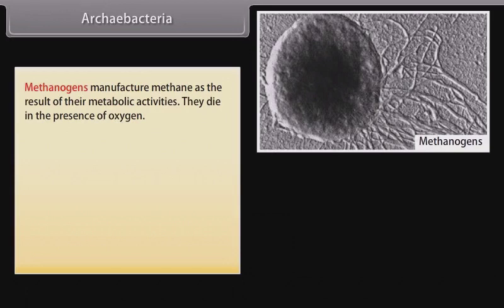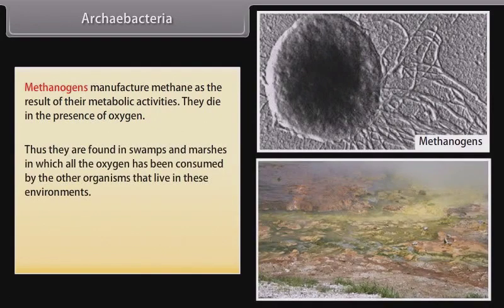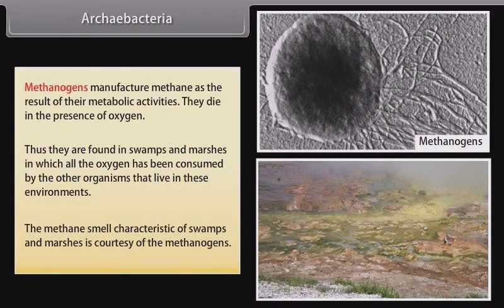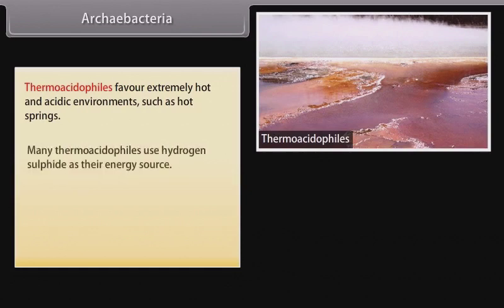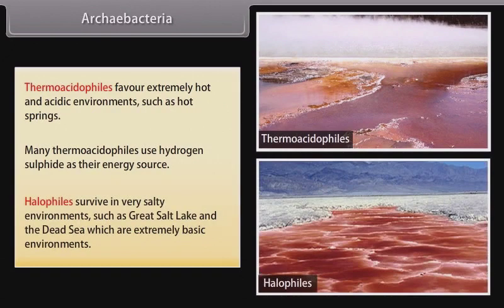Methanogens manufacture methane as the result of their metabolic activities. They die in the presence of oxygen, so they are found in swamps and marshes where all oxygen has been consumed by other organisms. The methane smell characteristic of swamps and marshes is courtesy of the methanogens. Thermoacidophiles favor extremely hot and acidic environments such as hot springs, and many use hydrogen sulfide as their energy source. Halophiles survive in very salty environments such as the Great Salt Lake and the Dead Sea.